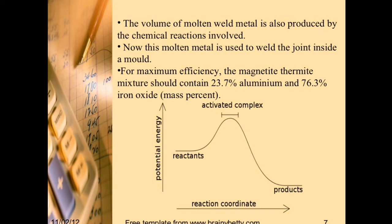This molten metal is used to weld the joint inside a mould. For maximum efficiency, the magnetite-thermite mixture should contain 23.7% aluminium and 76.3% iron oxide by mass percent. The graph shows the energy released in the thermite welding operation.